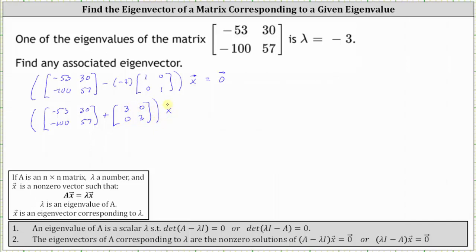We still have times the eigenvector equals the zero vector. And now I'll go ahead and sum the two matrices. Negative 53 plus three is negative 50. 30 plus zero is 30. Negative 100 plus zero is negative 100. And 57 plus three is 60.